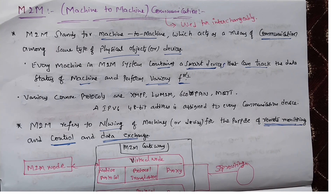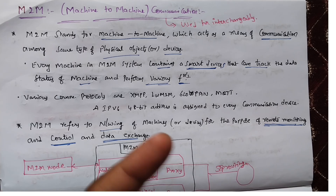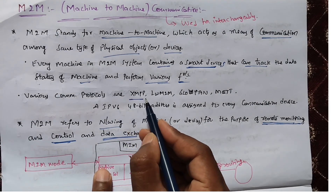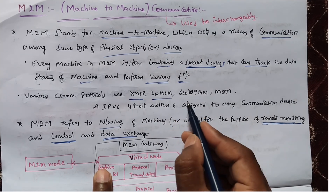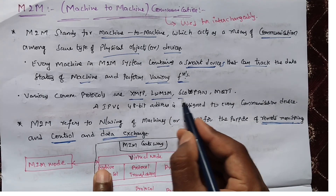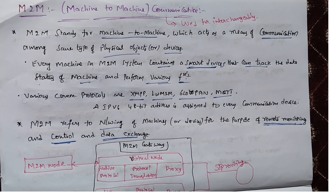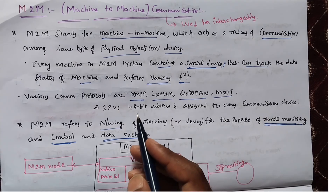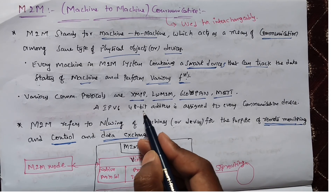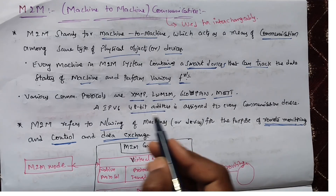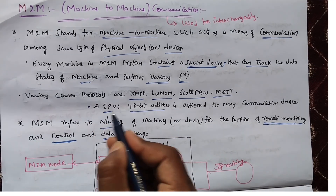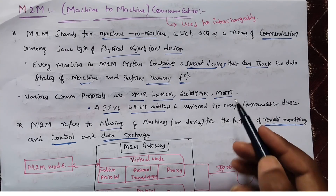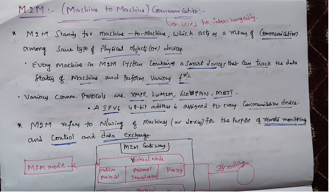In M2M communication, various protocols are used. The protocols are XMPP, LWM2M, 6LoWPAN, and MQTT. These are the various protocols and we will discuss them briefly in the next classes. In M2M communication, a 128-bit address will be assigned from the IPv6 protocol, which is used for device-to-device communication.